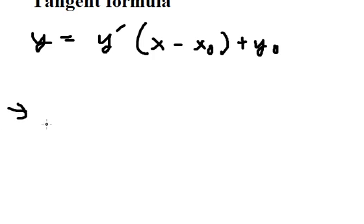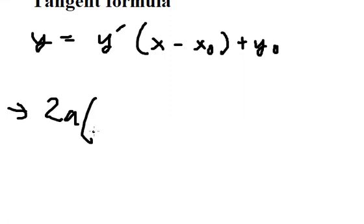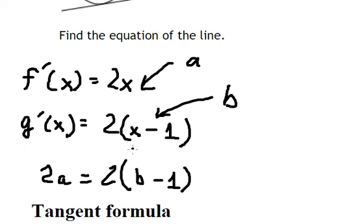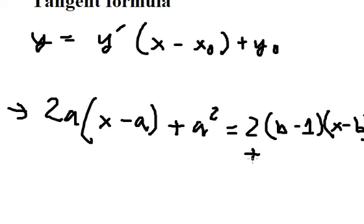So they should be like this: we have 2a times (x minus a), and we put a constant here and we have a squared. Then for the other function: x equals 2(b minus 1), and we have (x minus b).